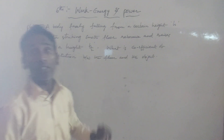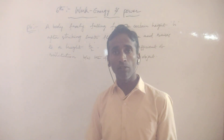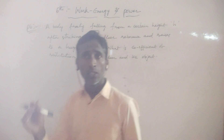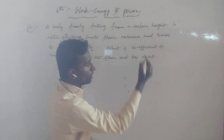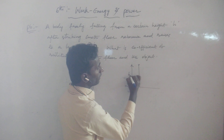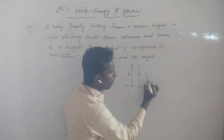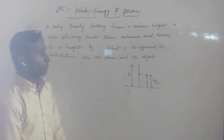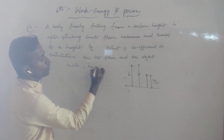This is a most important question. When you are asked about work, kinetic energy, and work-energy theorem, 100% you will get this type of question along with it. A body freely falls from height H — so H1 equals H. When the body touches the floor and rebounds, it reaches half the original height, so H2 equals H by 2.